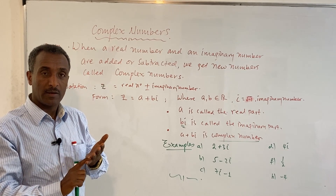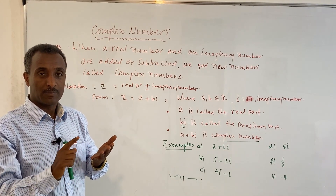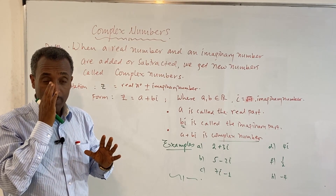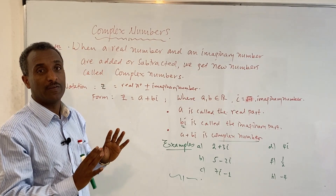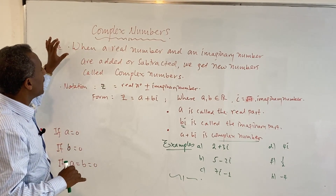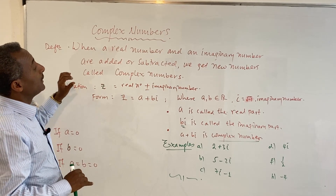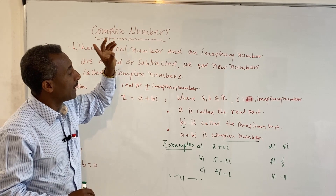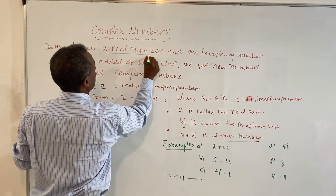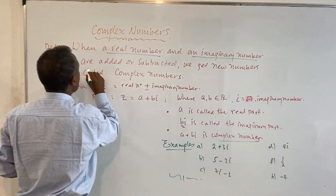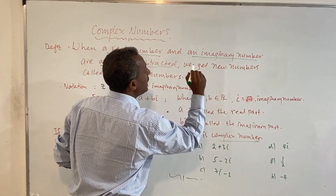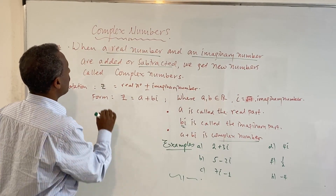We have defined imaginary numbers and we have seen them. A complex number is the sum or difference of a real number and an imaginary number. When a real number and an imaginary number are added or subtracted, we get a new number which cannot be simplified, called a complex number.